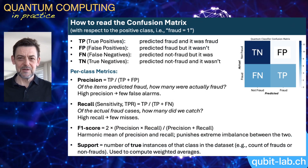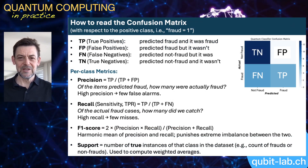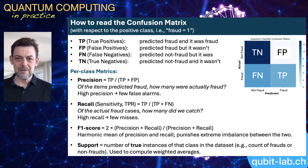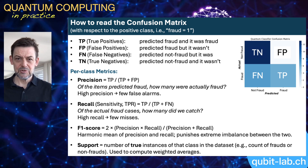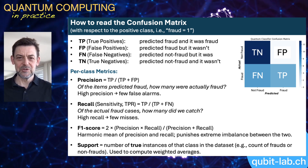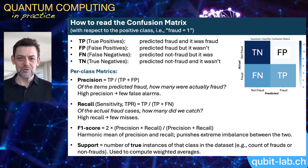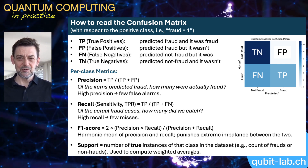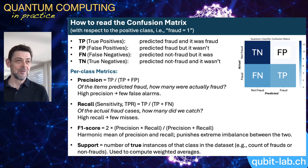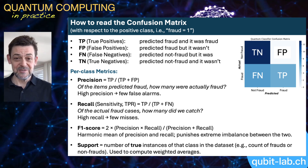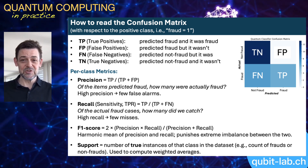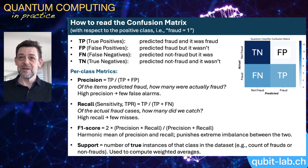To analyze the results, we will use the usual confusion matrix for such classifications. From the perspective of the fraud cases — class 1 — it shows true positives (predicted fraud in real fraud cases), false positives (predicted fraud but it was not fraud), false negatives, and true negatives. Based on that, we calculate the values for precision, the percentage of false alarms, and recall, the percentage of missed fraud cases. What we actually want are high values for both precision and recall, meaning few false alarms and few missed frauds.